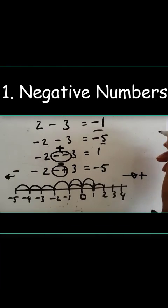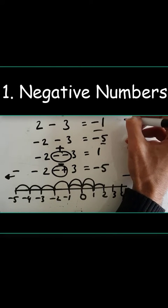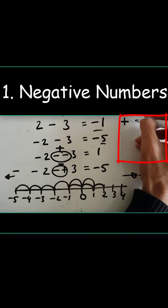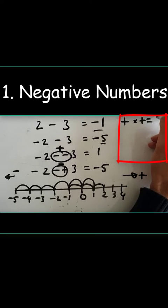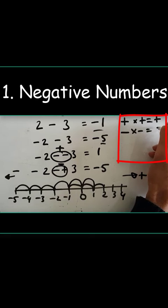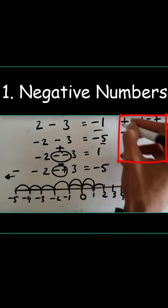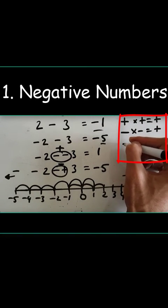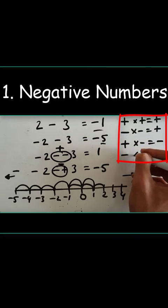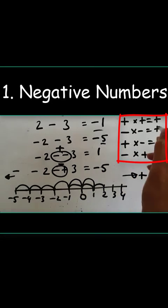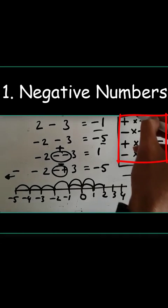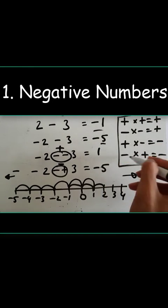Just to recap the rules of negatives: positive times positive gives a positive answer. Negative times negative also gives a positive answer — when the signs are the same, the answer is positive. When the signs are different — positive times negative, or negative times positive — the answer is negative. So to summarise: same signs give positive, different signs give negative.